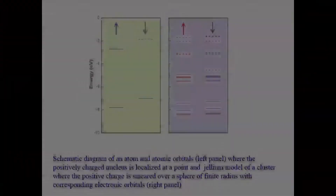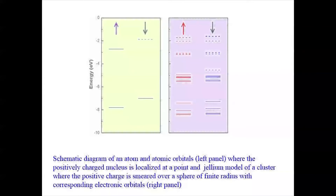First, why should we expect the properties of cluster-assembled materials to be any different from those where individual atoms are considered as the building block? Well, when atoms are assembled to form crystals, the energy levels of the valence electrons overlap and the resulting energy band structure determines the bulk properties. But the energy levels of clusters are very different from those of atoms — they are much more complex. So, when clusters are assembled to make a material, these complex energy level structures will overlap to form a new set of energy bands.